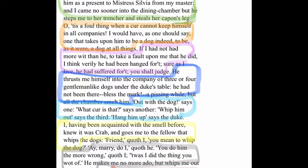Here's the next part: 'He thrust me himself into the company of three or four gentlemen-like dogs under the Duke's table. He had not been there, bless the mark, a pissing while, but all the chamber smelt him.' So he runs into the company of really well-behaved dogs under the Duke's table, and he hadn't been there very long — as long as it takes to urinate — before everybody in the room smelled him. Most people interpret that the dog peed, which is what I'd go with, since that's what dogs do most of the time and what most people can relate to.